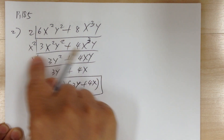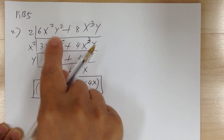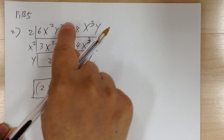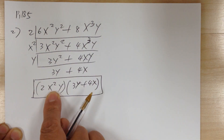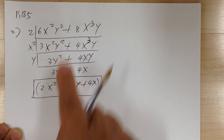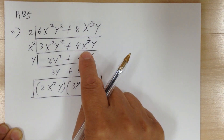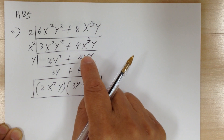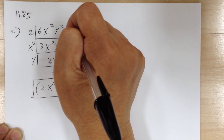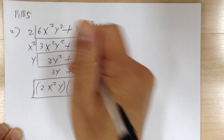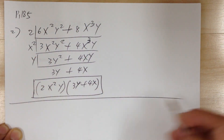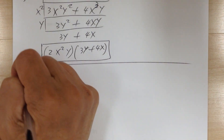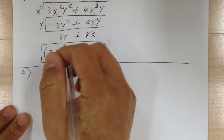You don't want to skip steps. If you can see the GCF directly, you can do that. But this step-by-step method is for when you don't know how to get the GCF. This is how you do it step by step.